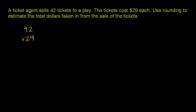If we want to round, we just have two places here, so we're going to round to the nearest 10, because that's the largest place we have. If we round 42 to the nearest 10, the 2 in the ones place is less than 5, so we're going to round down — the nearest 10 is 40. For 29, the 9 in the ones place is greater than or equal to 5, so we round up. The nearest 10 is 30.